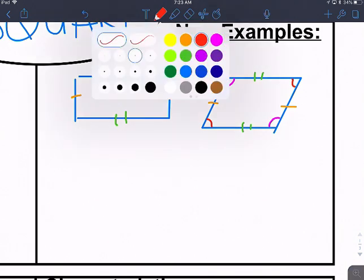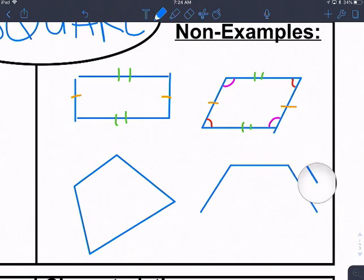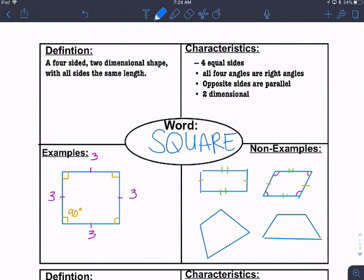We could just draw another four-sided figure. We could draw a trapezoid. Those are a few other non-examples.